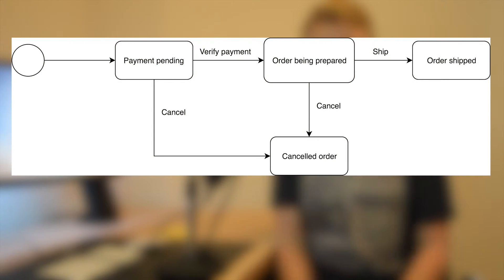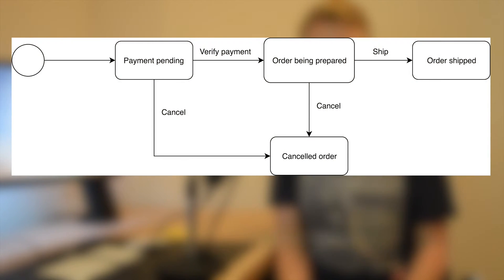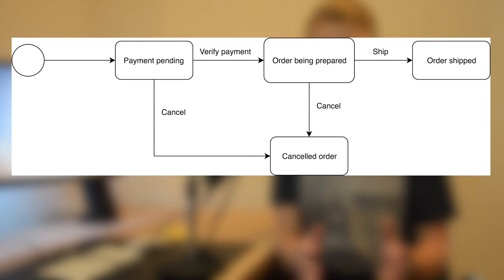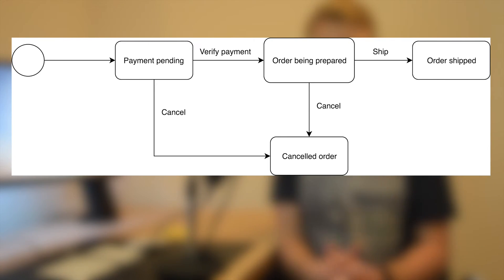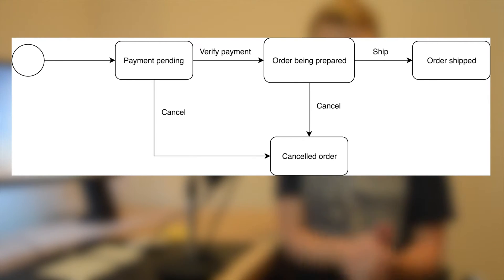Here's a simple diagram showing what the process could look like. It's a bit simplified, but it will do for this example. Each arrow represents an action that the system can take and each box represents the state of the order. It starts when the customer places an order — at that point we should verify the payment. After it is verified, it moves to the order being prepared state. In these states, the user has the option to cancel, but it should not be possible to move directly to the order shipped state or to any of the previous states. So let's take a look at how you can implement a system like this in a way that is flexible and future proof.